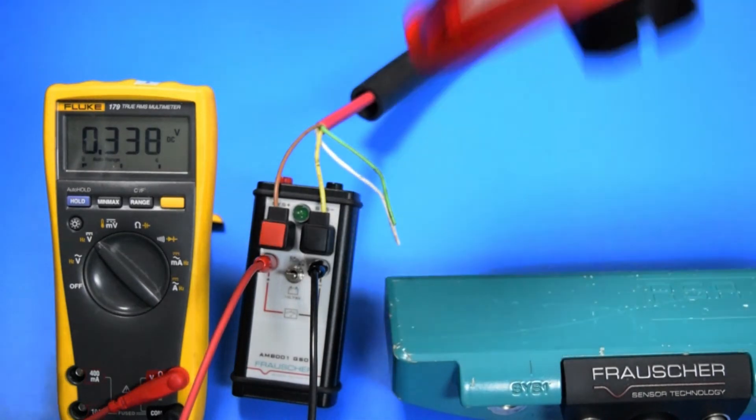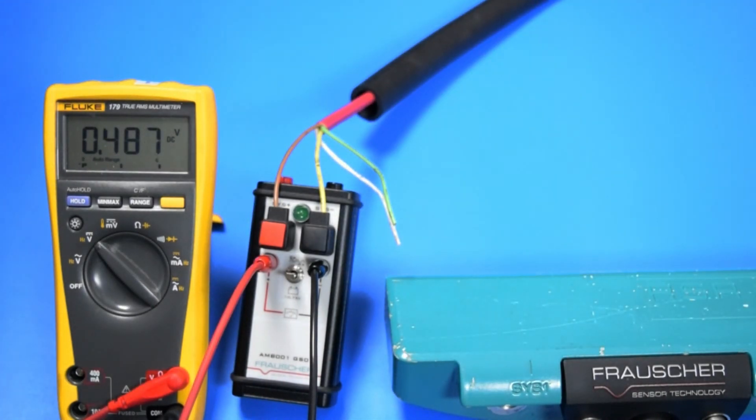At this time, the automated adjustment process is complete. You may now remove the transducer wires from the AMB.